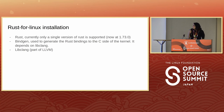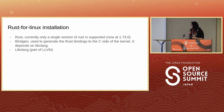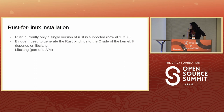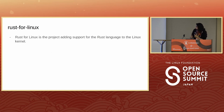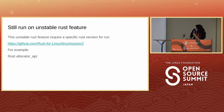Currently Rust for Linux only supports a specific version of Rust. You can try to build with an older one but probably not everything will work, because Rust for Linux uses some unstable features of Rust and these can break when you try to use it. It also uses BindGen, which binds the C side of the kernel, and the Clang part of LLVM.